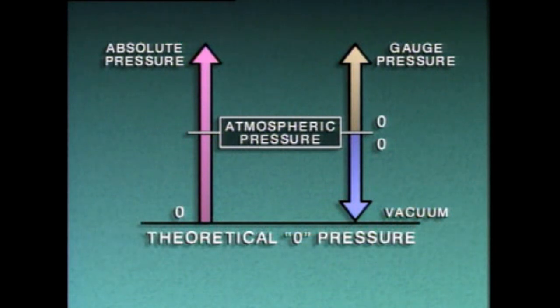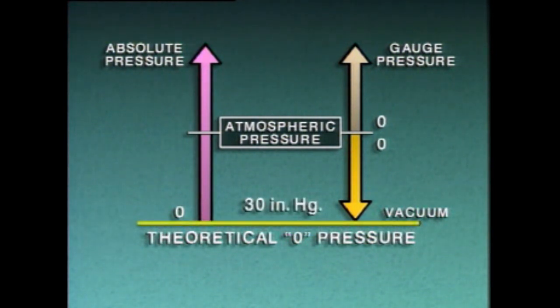If theoretical zero pressure, or a condition of perfect vacuum, could be reached, it would have a value of approximately 30 inches of mercury vacuum. A number of different devices can be used to measure pressure. One of the most basic pressure measuring devices is a manometer. A manometer operates on the principle that a column of liquid of a certain height will always exert a specific amount of pressure.